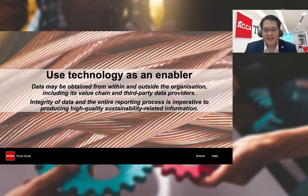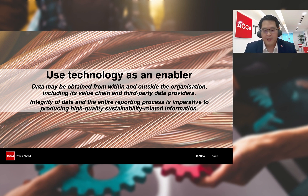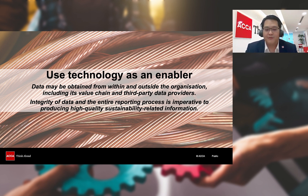Data can be obtained from within or outside an organization, including its value chain and third-party data providers. As such, integrity of data and the entire reporting process is imperative to producing high quality sustainability related information. In another video we've talked about determining material information for reporting. The considerations of data and technology as enablers are covered in stages 4, 5 and 7, specifically 7.2 of the sustainability reporting cycle.